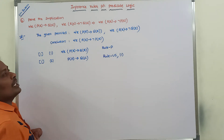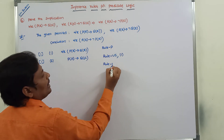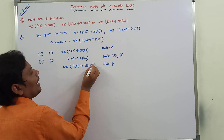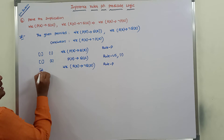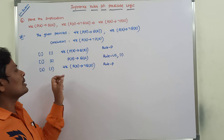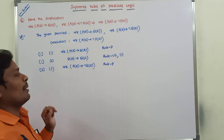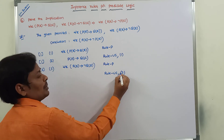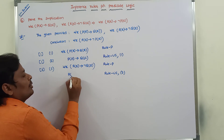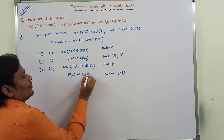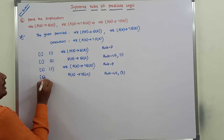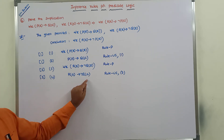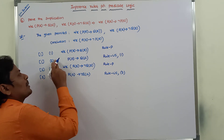Next, the second premise is introduced into the derivation using Rule P: for all x, r(x) → ¬q(x). This is the third step. Here also we eliminate the universal quantifier and change the variable name using Rule US — Universal Specification — applied on the third step. After eliminating the universal quantifier we get r(a) → ¬q(a). This is the fourth step.